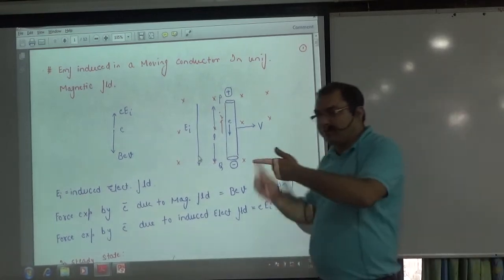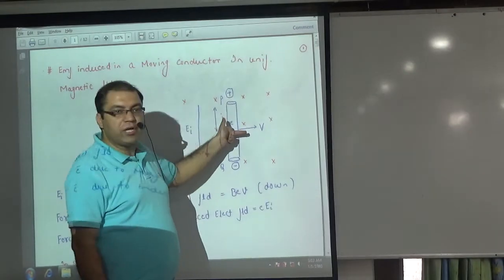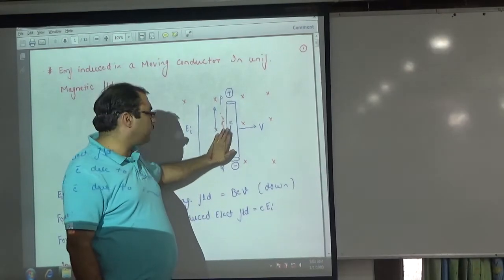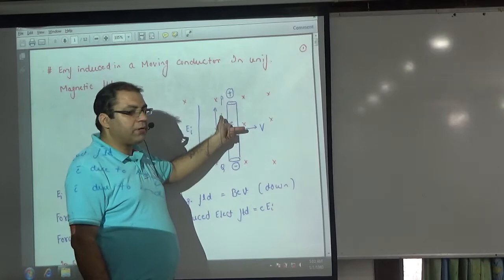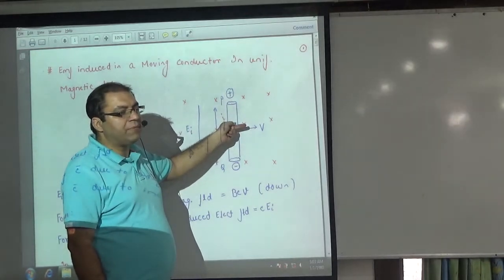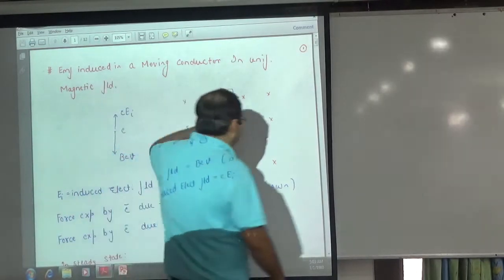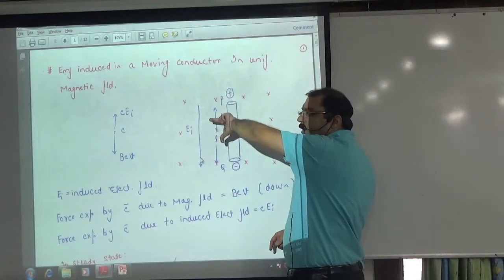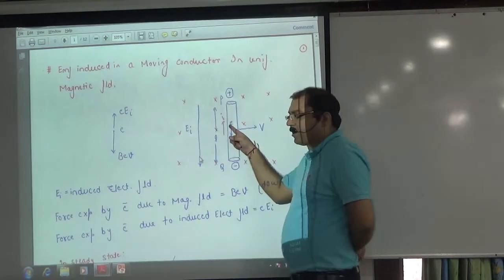Fleming's left hand rule. How is B on the board? Electron is right. But we can't take right because central finger represents direction of positive charge. Because electron is right, it takes here.